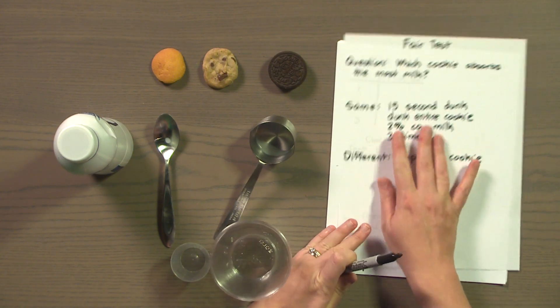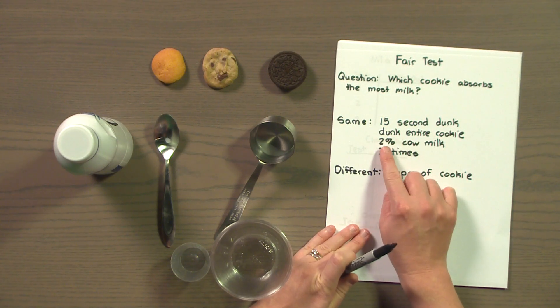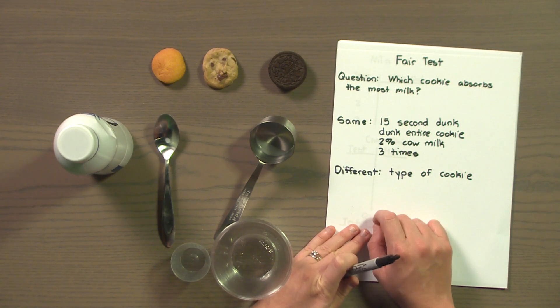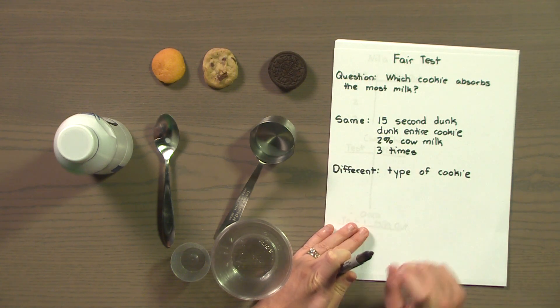We're going to keep the same: it's a 15 second dunk. We're going to dunk the entire cookie. We're going to use 2% cow milk. And we're going to do the test three times for each cookie. The only thing that's different is going to be the type of cookie: Nilla, chocolate chip, or Oreo. So, now our plan looks set. We're ready to begin the test.